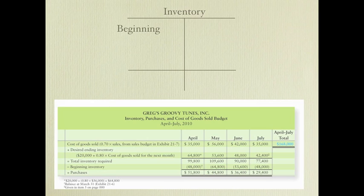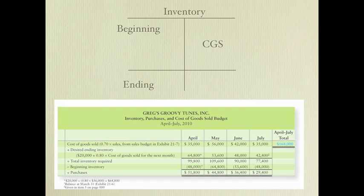We're going to fill in the T-account with things we already know. For example, we know beginning inventory — inventory is an asset so it carries a debit balance. Beginning inventory comes from the prior period's ending inventory. We can also figure out cost of goods sold for the next period, as that's a direct result of our sales budget from the prior lecture. And of course we decide what ending inventory we want left over at the end of the period.